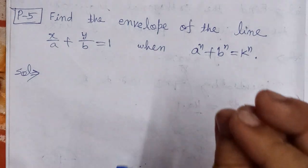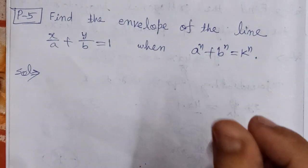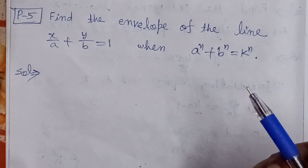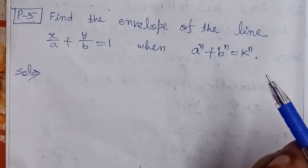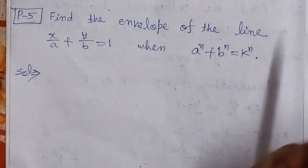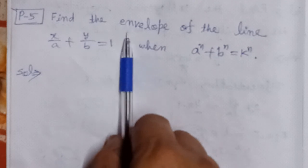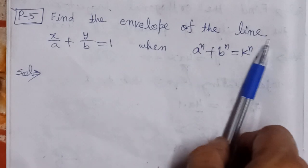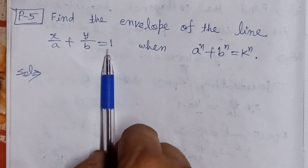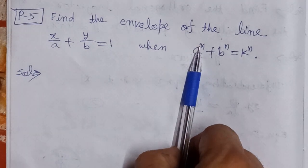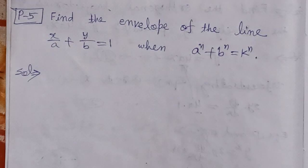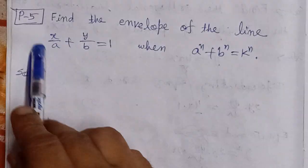Bismillahirrahmanirrahim. Nehmadahu wa nusalli ala muhammad rasulullahi kareem. This problem is from the envelope chapter of differential calculus. Find the envelope of the line x/a + y/b = 1, when a^n + b^n = k^n.